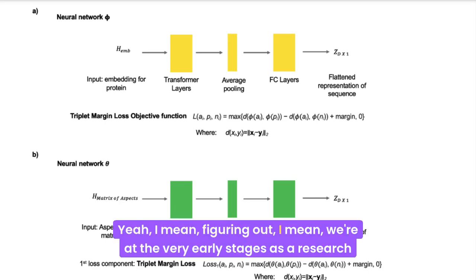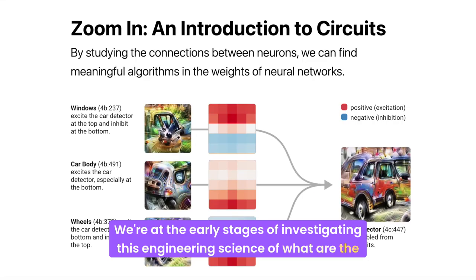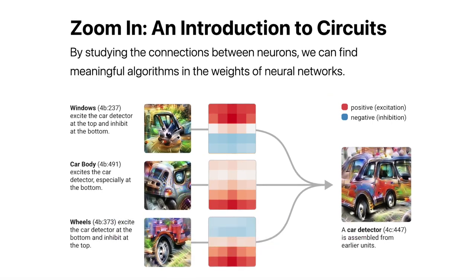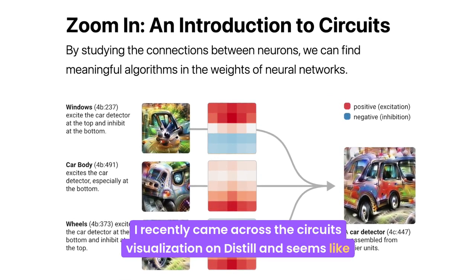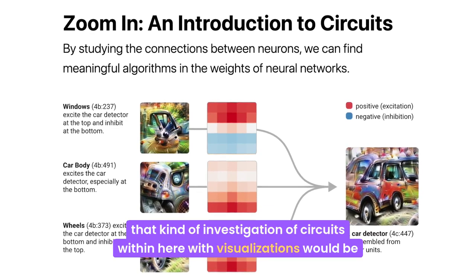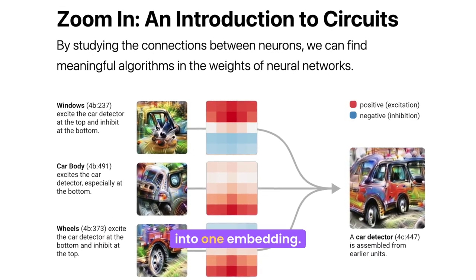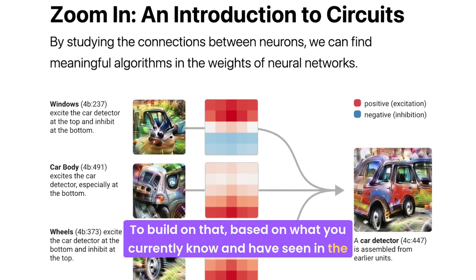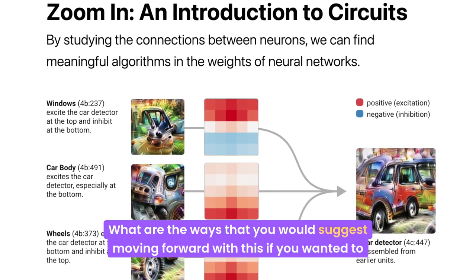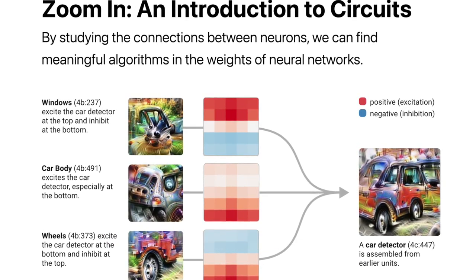We're at the very early stages as a research community of investigating this engineering science of what are the best ways to visualize and understand neural networks. I recently came across the circuits visualization work on Distill — that kind of investigation of circuits with visualizations would be useful, especially given that you can get sequence and structure information into one embedding. Based on what you currently know and the current state of the art, what are the ways you would suggest moving forward?